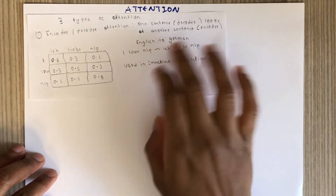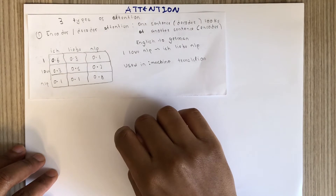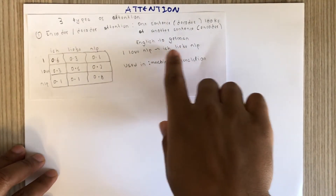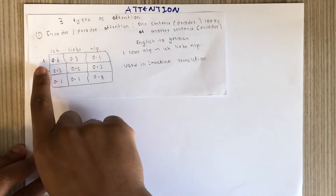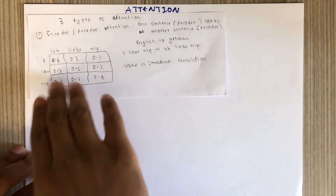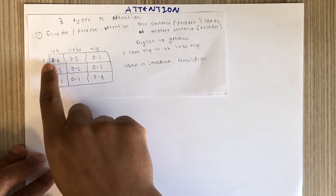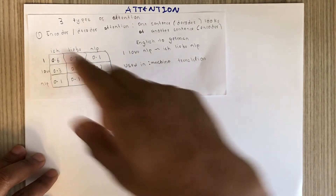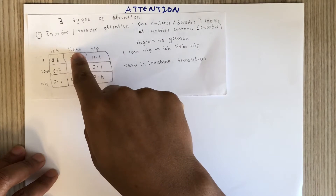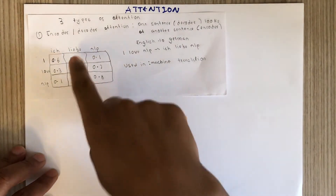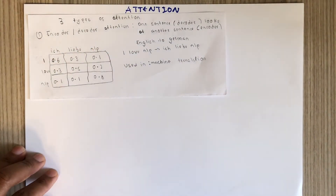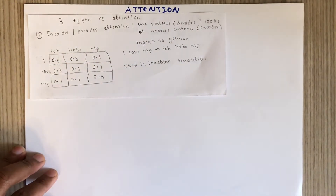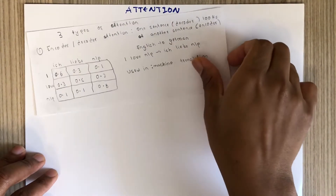For example, translating from German to English. When generating the word 'I', attention tells you how much attention you should pay to each German word during training. The sum of attention weights is one.